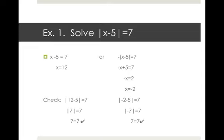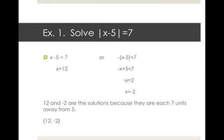We check both solutions in the original absolute value statement. Plugging in 12: absolute value of 12 minus 5 equals absolute value of 7, which equals 7 — true. Plugging in negative 2: absolute value of negative 2 minus 5 equals absolute value of negative 7, which equals 7 — true, because negative 7 is 7 units away from 0. Both solutions work: 12 and negative 2 are each 7 units away from 5.